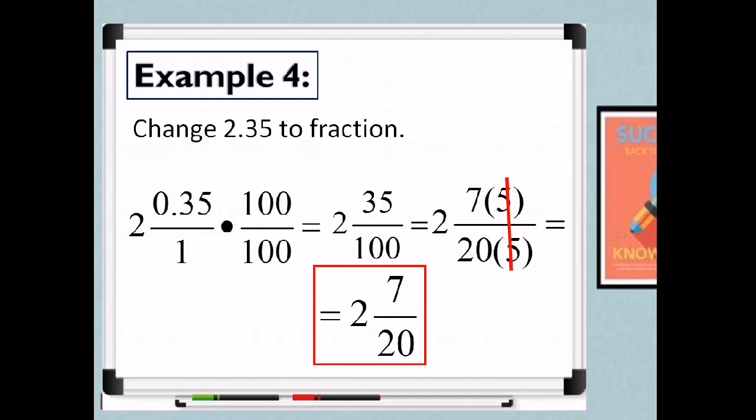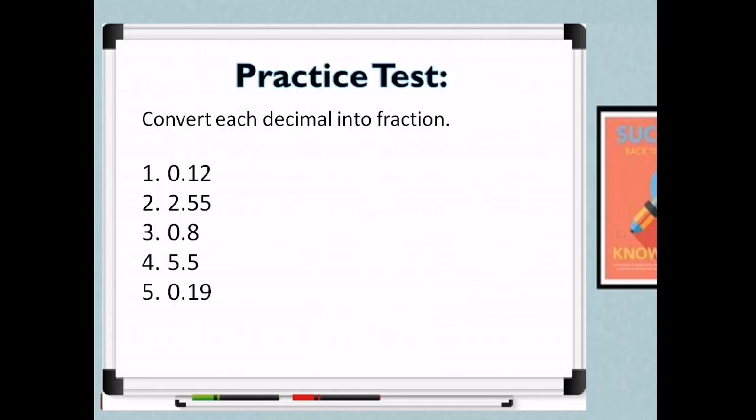That's how easy it is to convert decimals into fractions. Remember: multiply the numerator and denominator depending on the place value of the decimal — tenths means multiply by 10, hundredths by 100, thousandths by 1,000, and so on. I hope you've learned the easy steps on how to convert decimals into fractions. Now it's your time to practice — get your pen and paper and answer these 5 items.